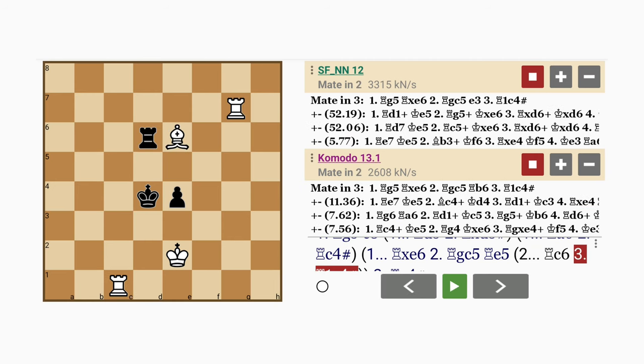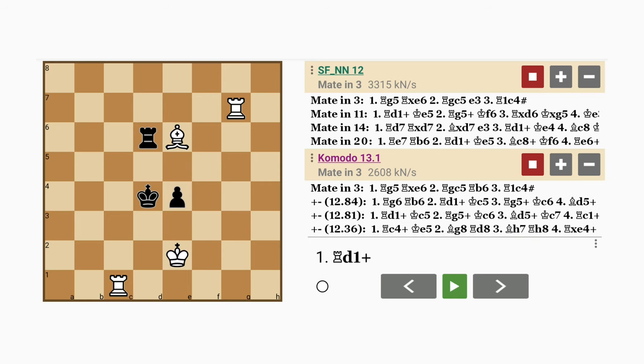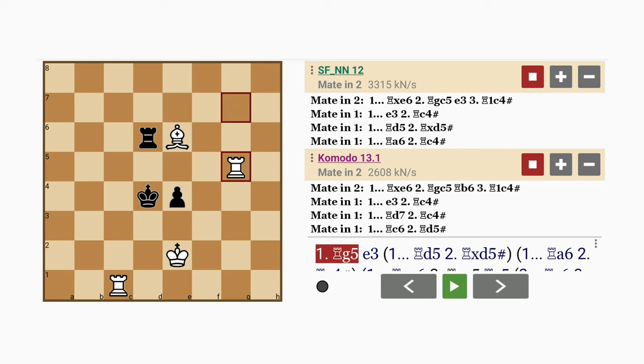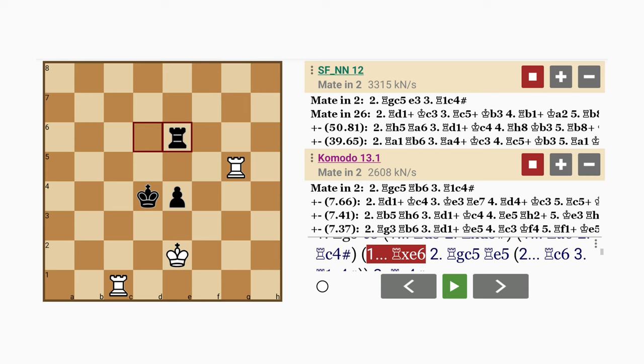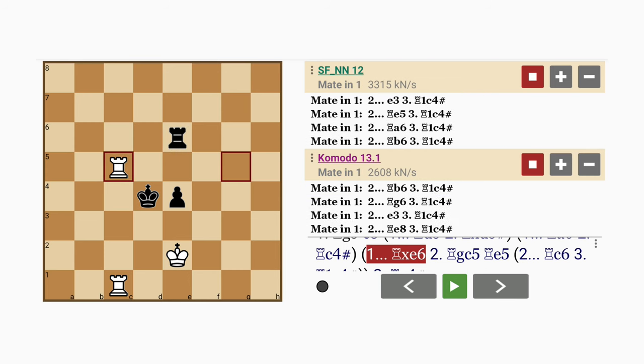Now no matter what black plays, rook on the first rank to c4 checkmates. Let's rewind. So in this position you can actually win in just three moves by ignoring the threat to the bishop and moving the rook to g5. Because as we saw, the best defense to this is rook captures bishop, and after this rook on the g file to c5, and then rook on the first rank to c4 cannot be avoided.